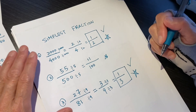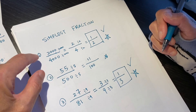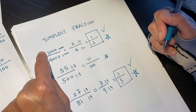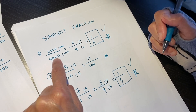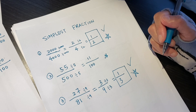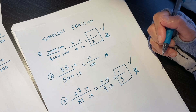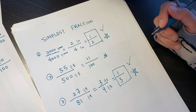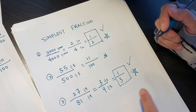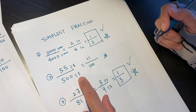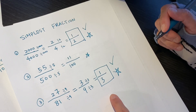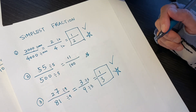So the rule of thumb: to make a fraction into the simplest form, you have to try to divide the top and the bottom by the same number. If you cannot find a number that divides both exactly, then that is already the simplest fraction. Keep on dividing until you cannot divide any further. This is the simplest fraction.